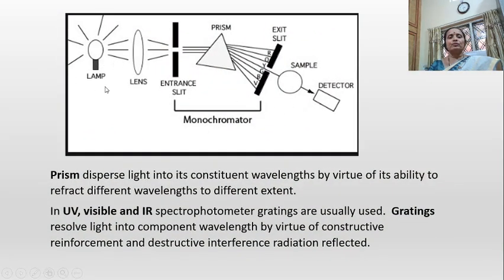So in this monochromator diagram, we have a source, a lens, an entrance slit, a prism, and an exit slit where only the required wavelength is obtained, which is then passed through the sample and detected.